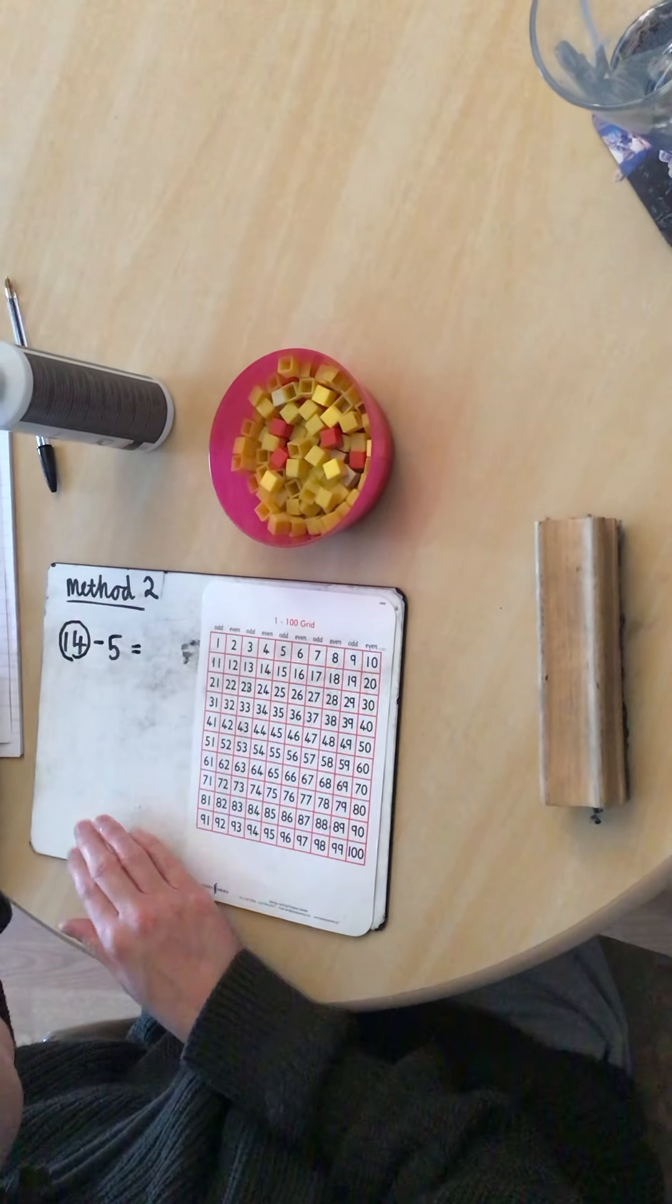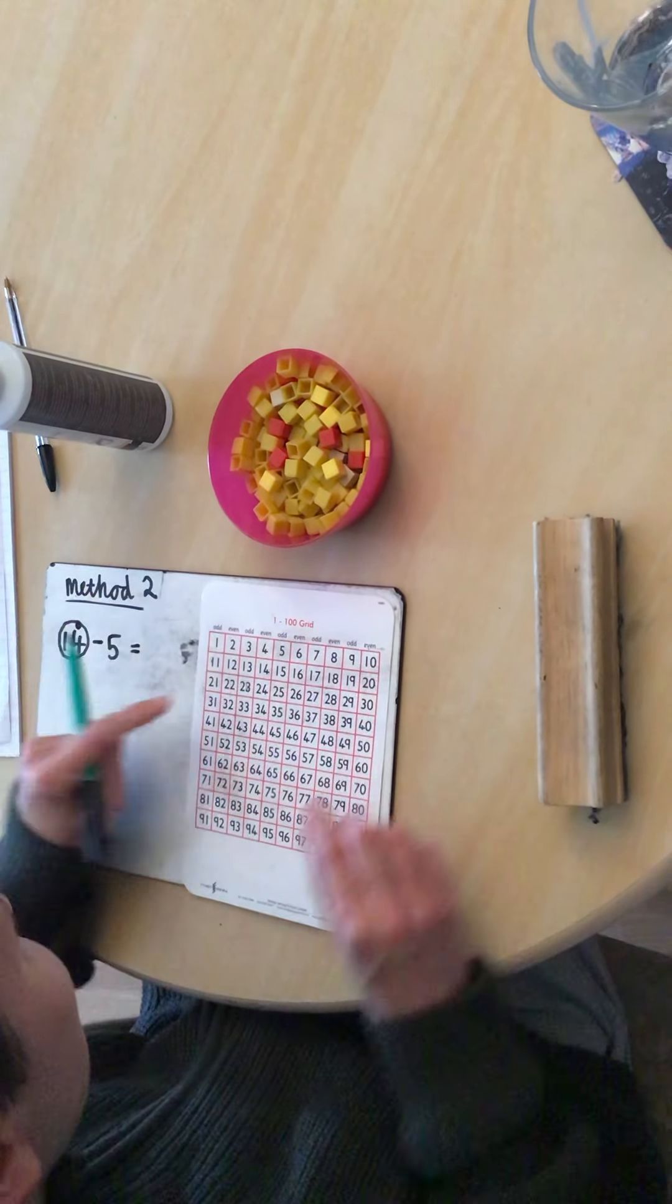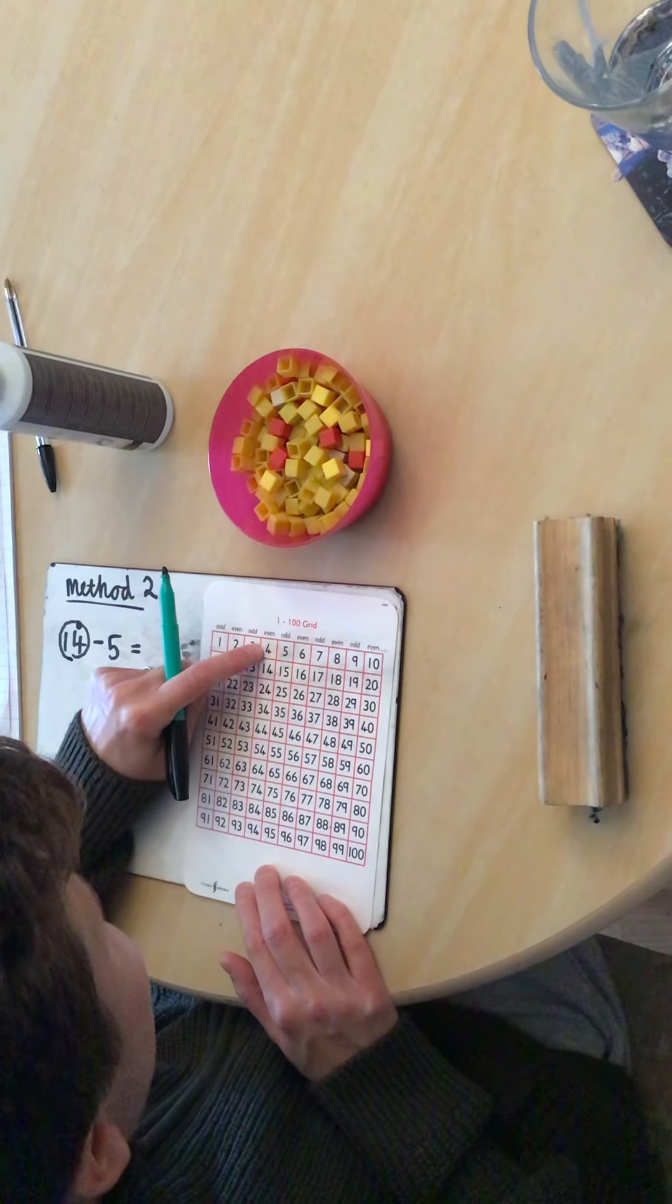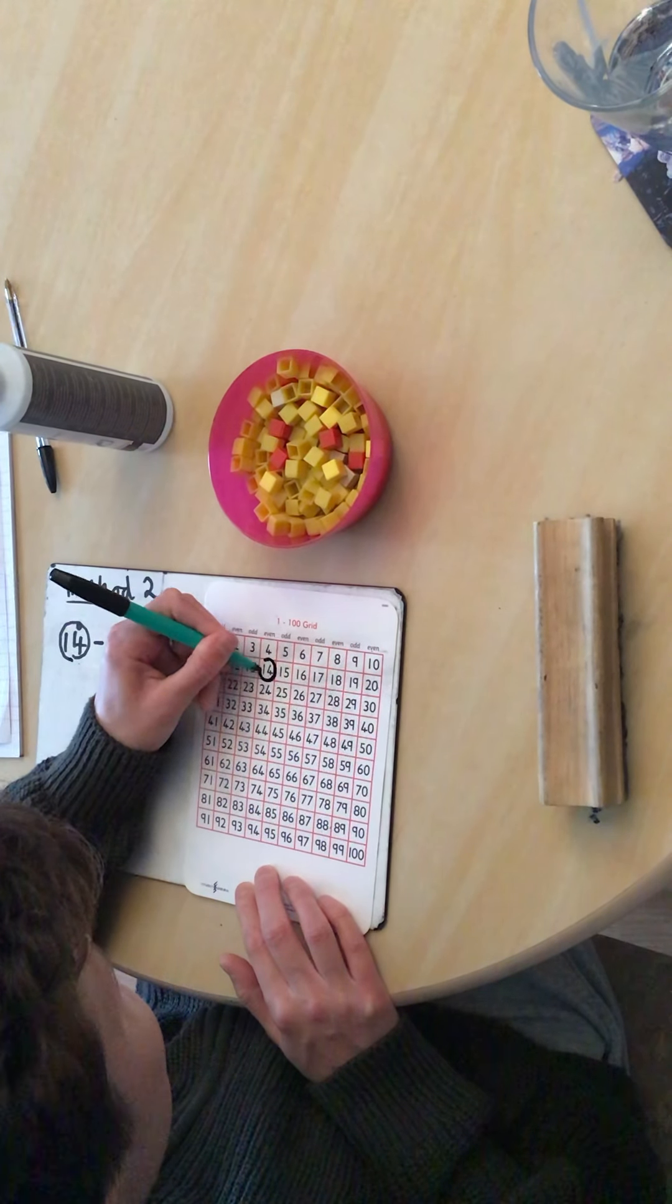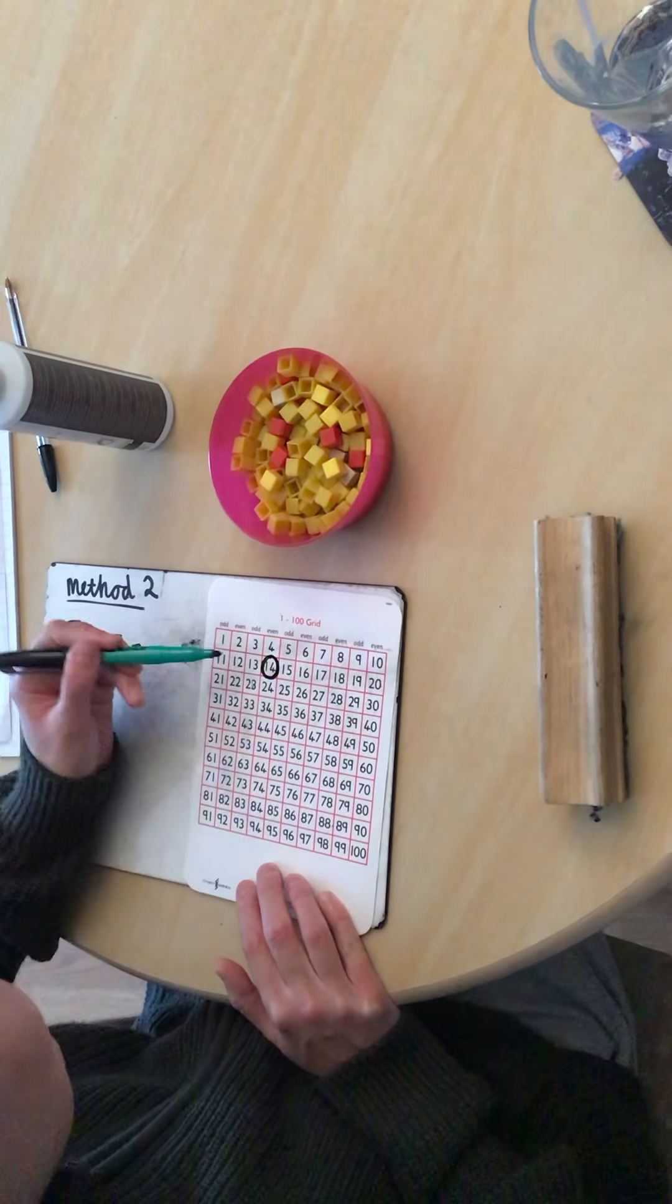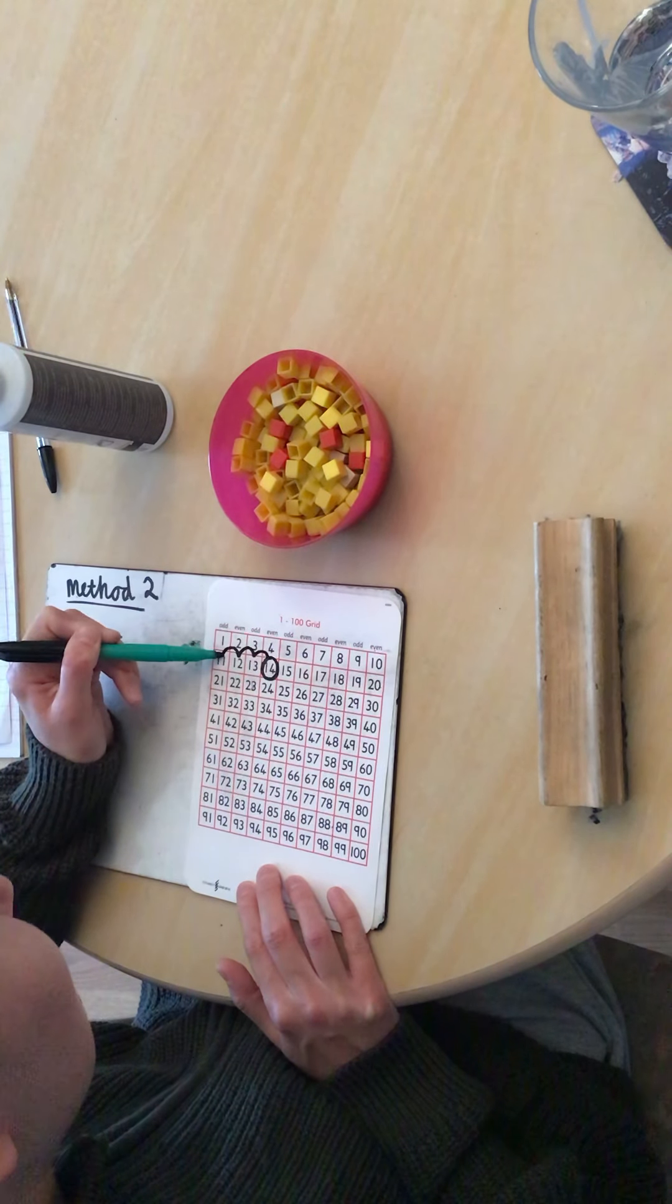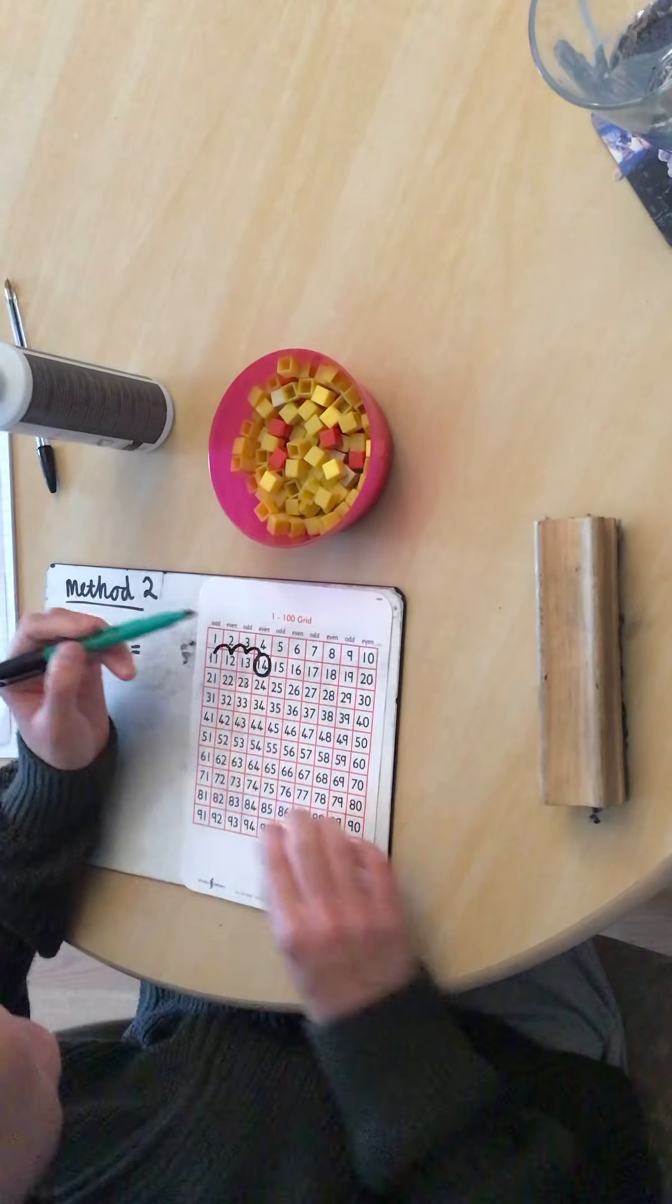So let's have a go at 14. 14, take away 5. What are we going to do first, children? Yes, we circle our biggest number, because that's how many we have. And we find it on our 100 square. Now I know it's going to have 4 ones. So if I go across, there's 1, 1, 2, 1, 3, 1, 4, 1. I can go down here. Yes, there's 14. It's got a lazy teen. So I'm going to circle 14.